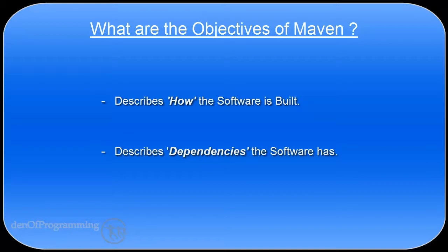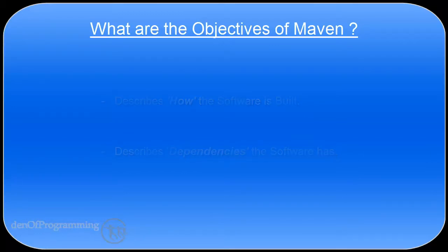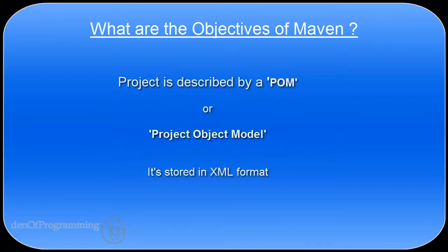For example, component A may depend on components D and E for it to run. Unlike other build tools such as Ant, Maven isn't script-based. A Maven project is described by an object model — a model that describes all the components held within a project itself, and this has been given the name of POM, or Project Object Model.